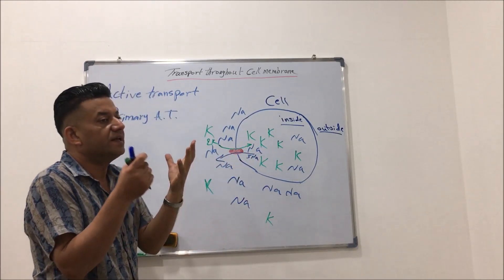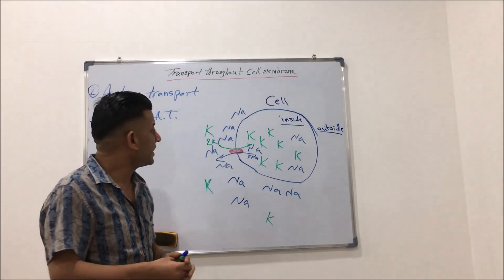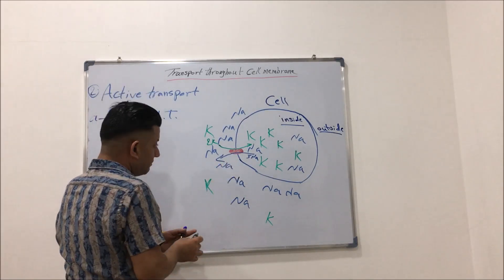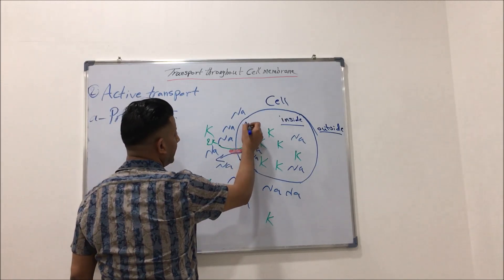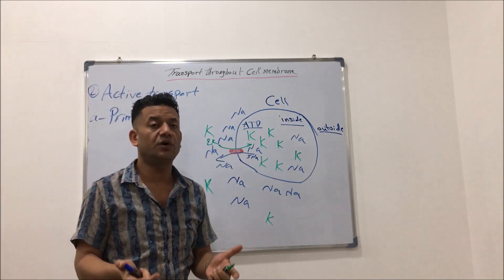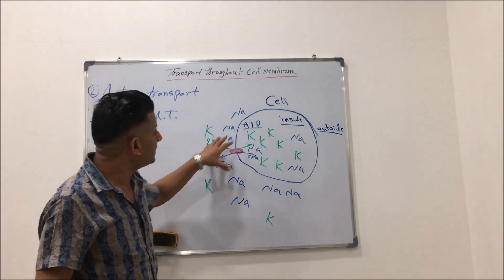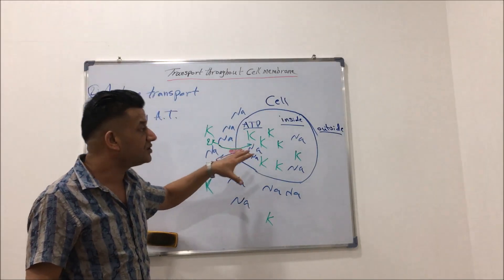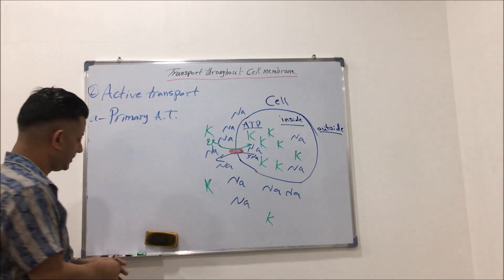So this transport needs energy. The sodium-potassium pump will consume ATP — adenosine triphosphate — which is the energy of the cell. Because of this direct consuming of energy, it is called primary active transport.